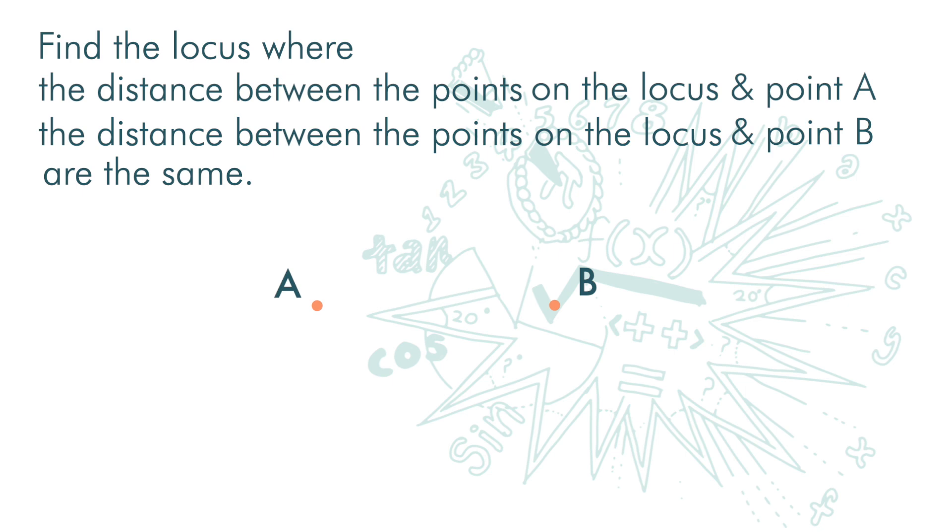The most obvious point of this locus is the midpoint between A and B. If we label this point Z1, by definition of a midpoint, the distances from Z1 to A and B are equal.